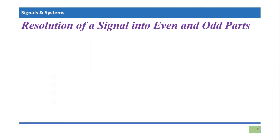different parts: one part is even and the other part is odd. So in this video tutorial, I'm going to resolve those two parts and evaluate the mathematical representation and mathematical equations for those even and odd parts. So let's start our discussion. Let's say x(t) is a 'neither' signal which has both parts: e(t)